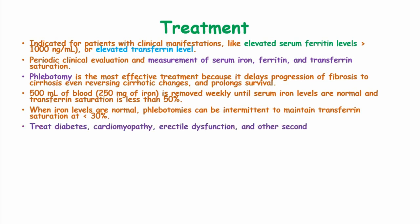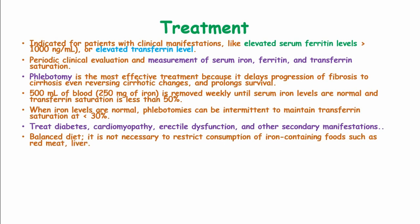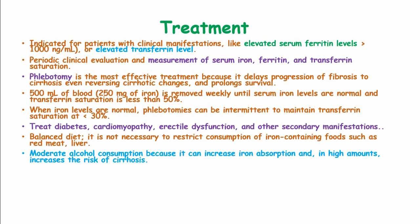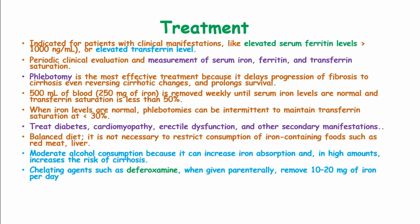Diabetes, cardiomyopathy, erectile dysfunction, and other secondary manifestations should be treated accordingly. It is not necessary to restrict consumption of iron-containing foods such as red meat and liver. Moderate alcohol consumption may need to be addressed, as alcohol increases iron absorption and in high amounts increases the risk of cirrhosis; if possible, patients should stop drinking alcohol. Chelating agents such as deferoxamine, when given parenterally, may remove 10 to 20 mg of iron per day, compared to phlebotomy. Liver transplantation may be needed in cases where the patient has developed liver cirrhosis.